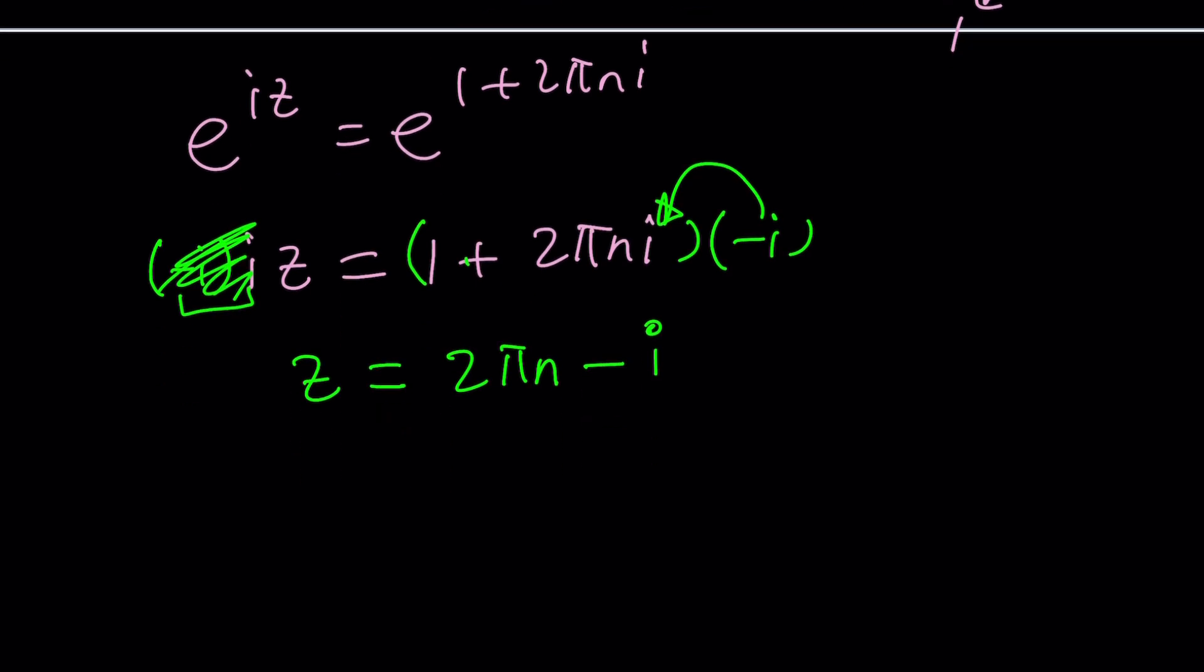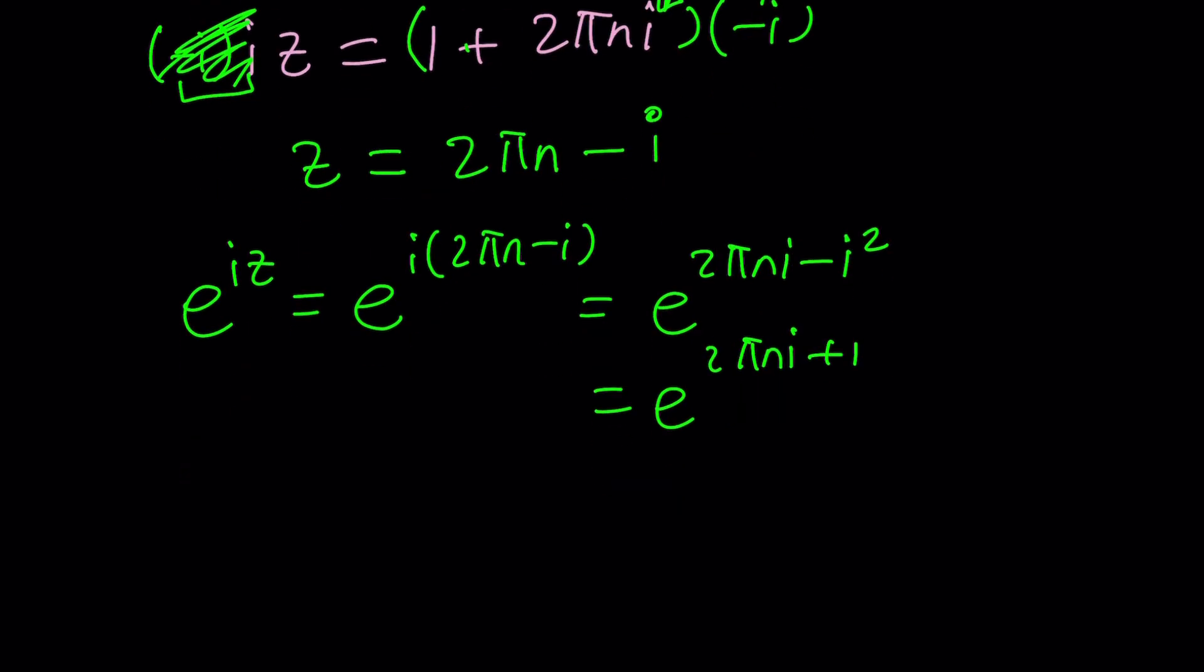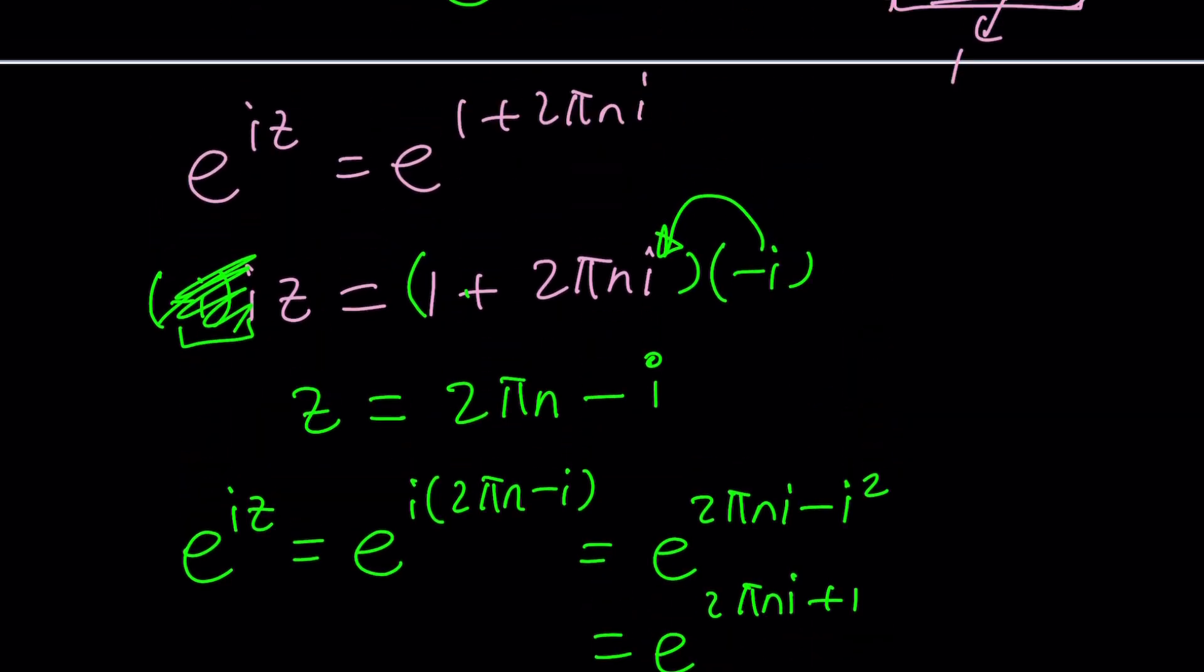Does that really work though? It's kind of hard to check unless you use the formula. e to the iz is e to the i times (2πn - i), that's e to the 2πni minus i squared which is one. It's e to the 2πni plus one, which is e to the 2πni times e to the one, which is e. And this is one so the answer will be e. Yes, this satisfies our equation so that should be the solution. What is n? n is an integer.